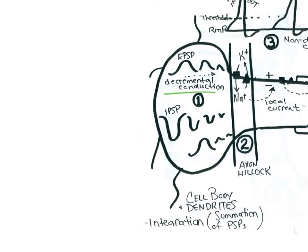These graded potentials — these EPSPs and IPSPs — experience decremental conduction. That means that as they move from their site of stimulation towards the axon hillock, their amplitude is going to decrease. Although it may be a very large EPSP, by the time it reaches the axon hillock it would have decreased in amplitude. Similarly, an IPSP decreases in amplitude, and another EPSP as well, assuming three points of stimulation. That's one of the main points about graded potentials: decremental conduction.